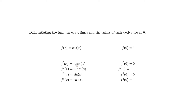For the fourth derivative, we differentiate sine x to get cosine x. Cosine of zero is 1, so the fourth derivative at zero is 1 — back to the original value. This pattern repeats: the fifth derivative matches the first, the sixth matches the second, the seventh matches the third, and so on.